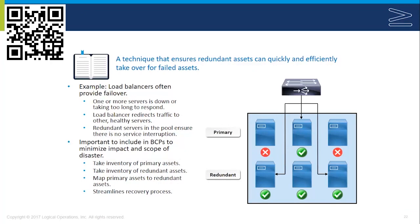It's important to include failover in the BCP to minimize the impact and scope of disasters. We need to take an inventory of primary and redundant assets and map them to each other to streamline recovery. Ideally, we identify the most critical business functions and the components involved in maintaining them, then ensure high availability for those components.